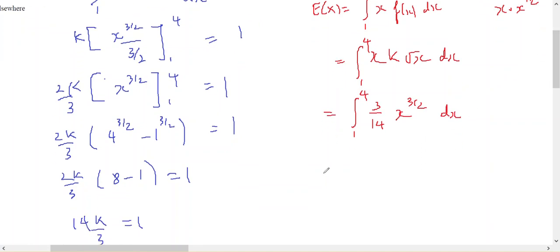which should equal 3 on 14, x to the 5 on 2, on 5 on 2, from 1 to 4, which will equal 3 on 14 times 2 on 5, times 4 to the 5 on 2, minus 1 to the 5 on 2.